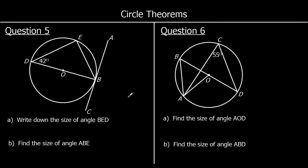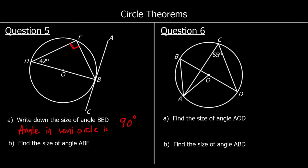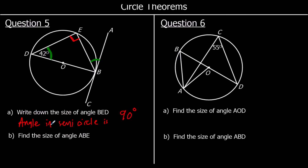Question 5: write down the size of angle BED. We can see we've got an angle in a semicircle — BD is a diameter going through the center from circumference to circumference. An angle in a semicircle is 90 degrees, so BED = 90 degrees. Now find angle ABE: this is the alternate segment theorem, so ABE = 42 degrees.